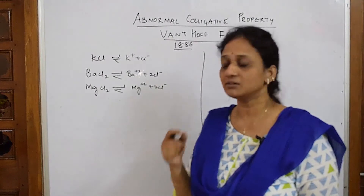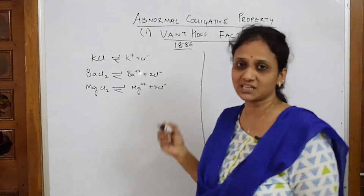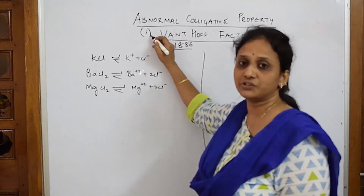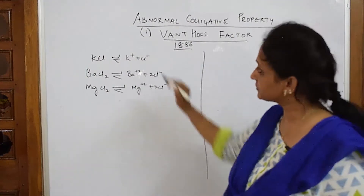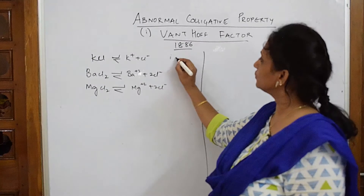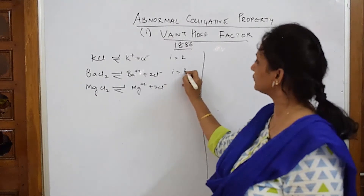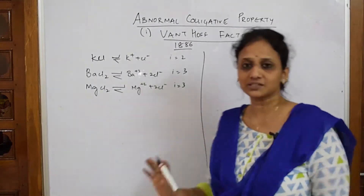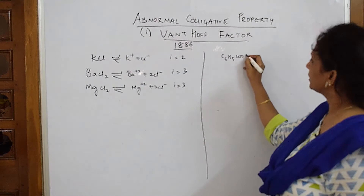He gave a unit called Van't Hoff's factor, denoted by I. He said the I factor is the number of ions formed upon dissociation. For KCl, I equals 2; for BaCl₂, there is 1 plus 2, so I equals 3; for MgCl₂, I factor is also equal to 3.